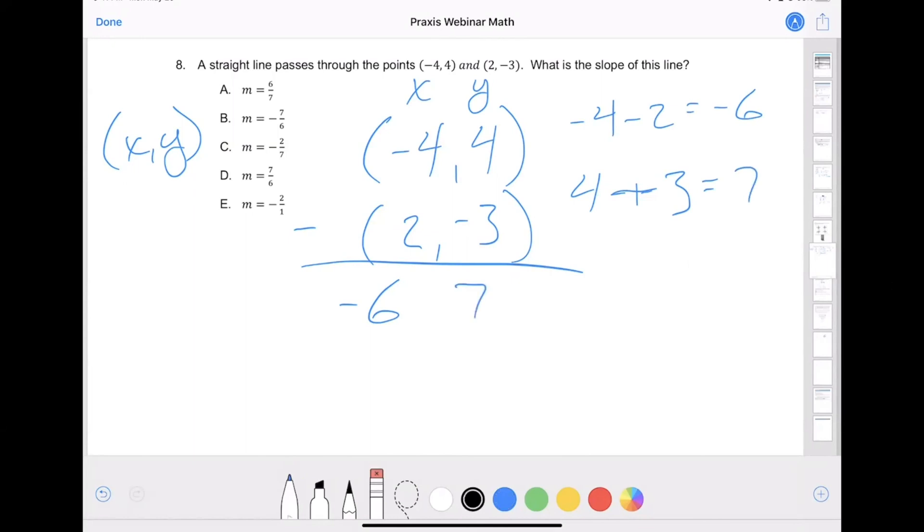Now remember, slope is the change in y over the change in x. So this is which one is our x and which one is our y. If we look, that's why we put x and y up top—we have seven over negative six. Doesn't matter where the negative is, top or bottom, it's going to make the whole thing negative. Therefore, our answer is going to be B, negative seven over six.